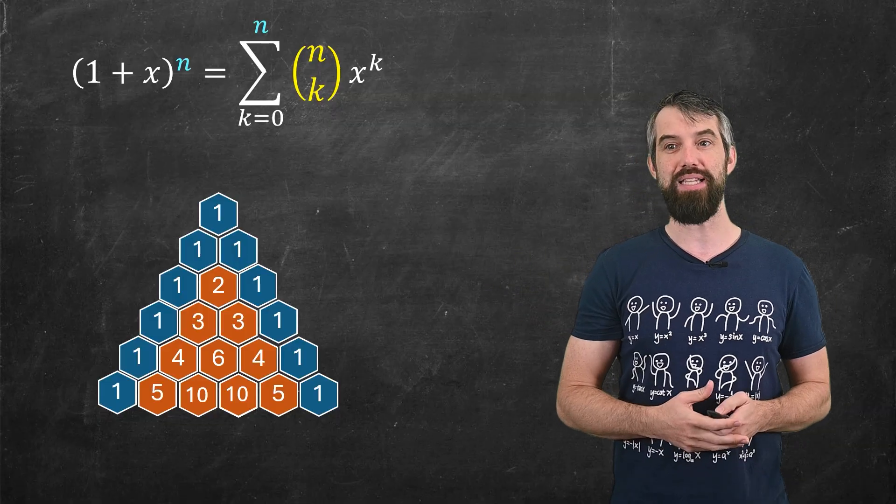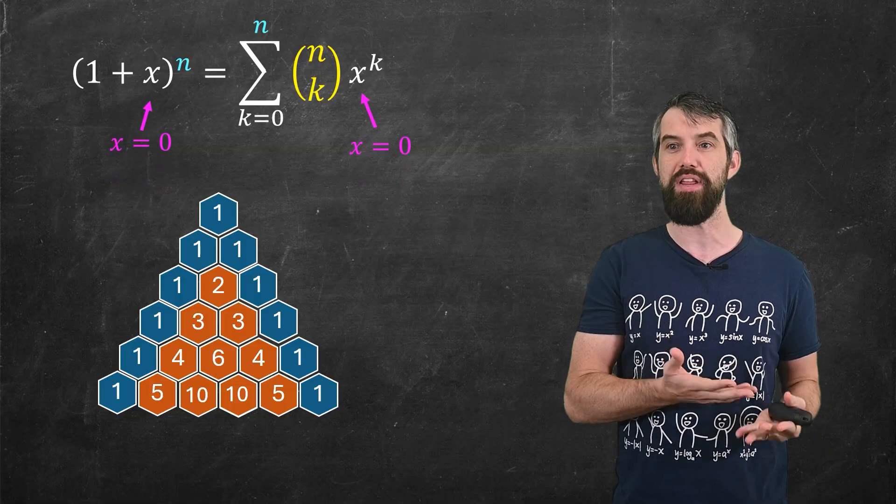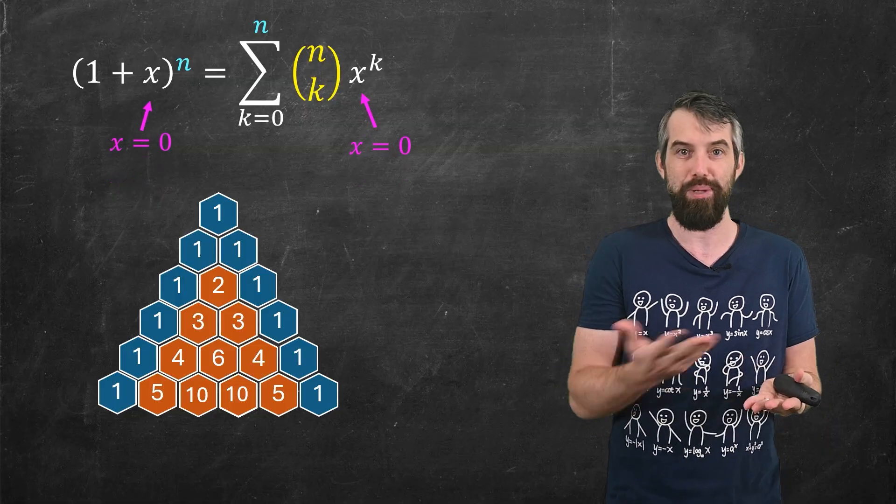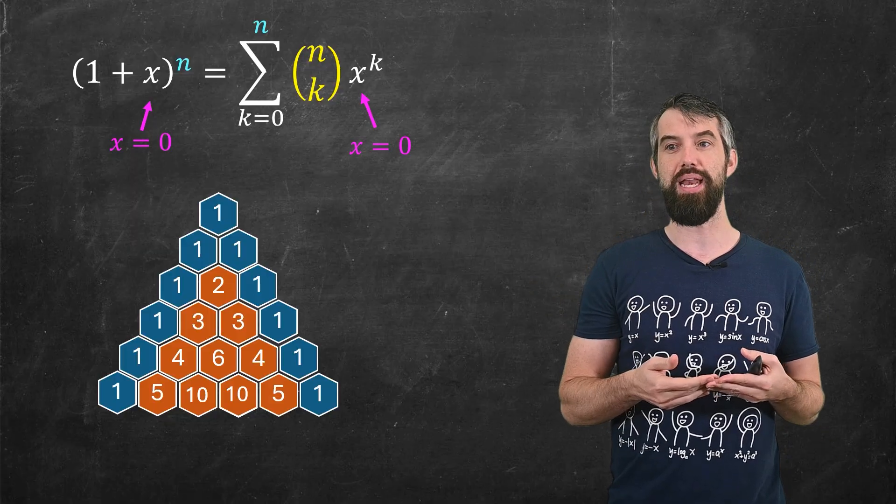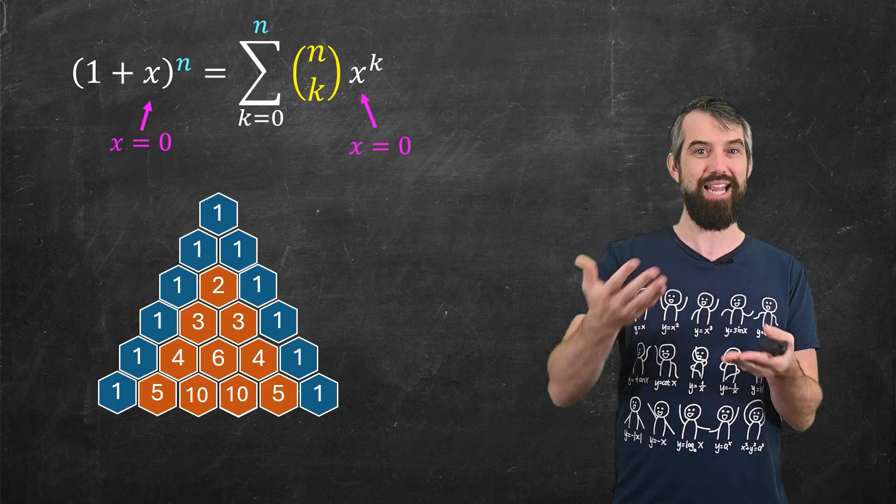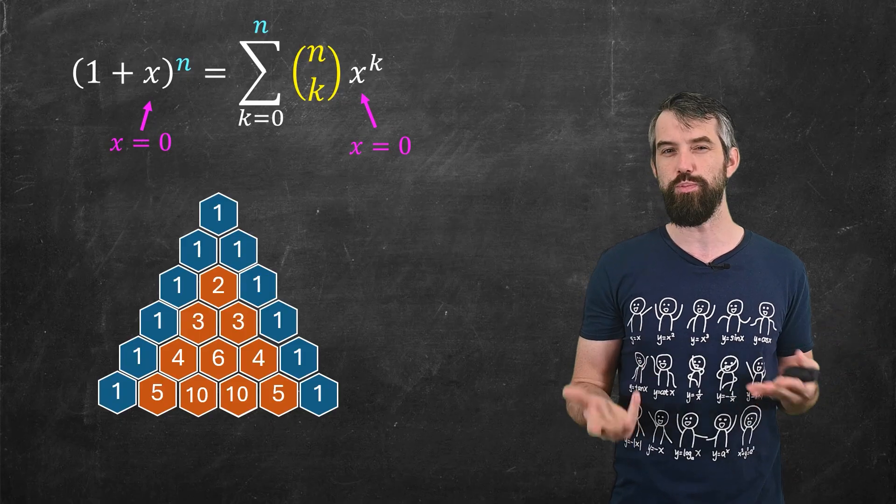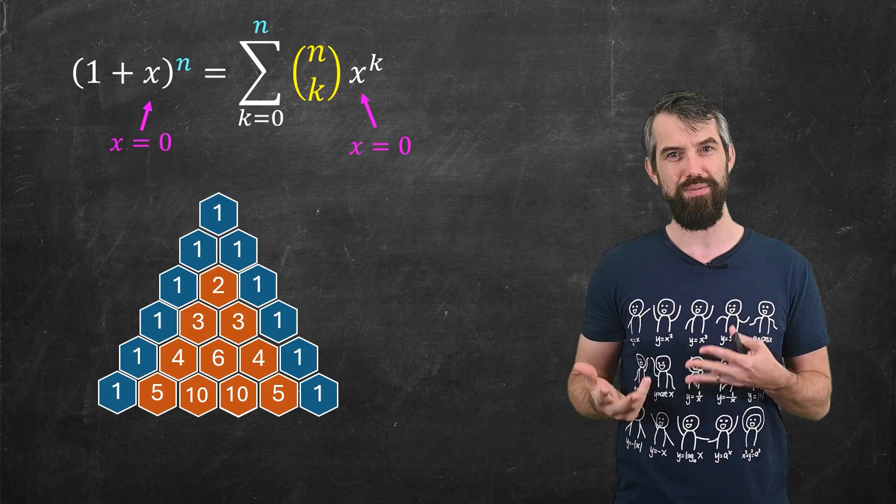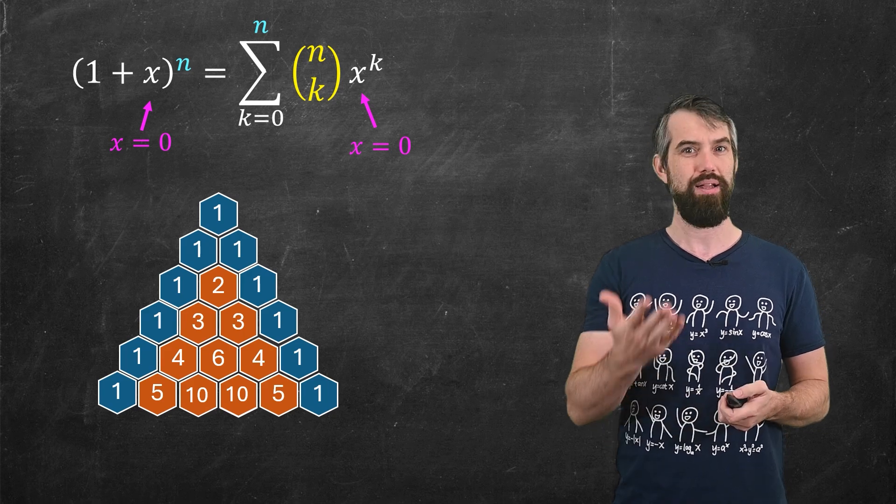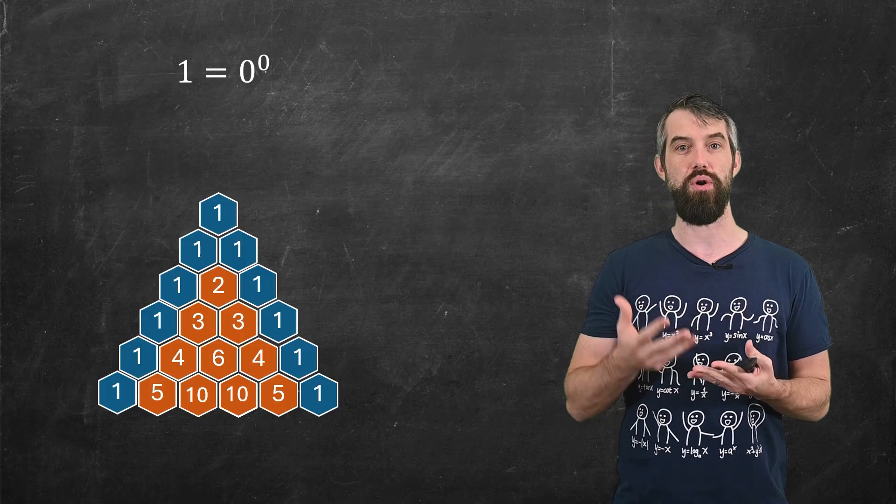And if I look on the left hand side, I imagine plugging in x equal to zero. There's nothing wrong with plugging x equal to zero on the left hand side, right? So that's just one plus zero to the power of n, one to the n. But on the right hand side, if I was to plug in x equal to zero, then in the k equal to zero case, I'd have zero to the zero appearing. There's no reason the left hand side expression should stop making sense at x equal to zero.